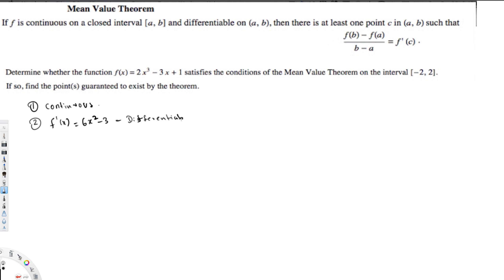Therefore we can use the Mean Value Theorem. To apply it, I need to equate f prime of x to [f(b) - f(a)] / (b - a). We have the two points given: b = 2. So if I substitute x = 2 into f(x): 2 times 2³ = 16, minus 3 times 2 = 6, so 16 minus 6 is 10, plus 1 is 11. So f(2) = 11.